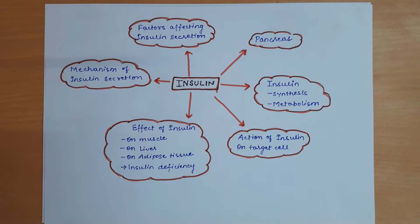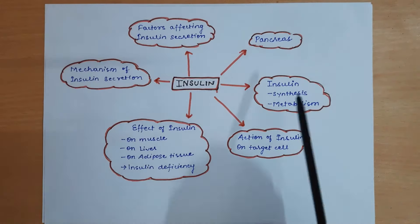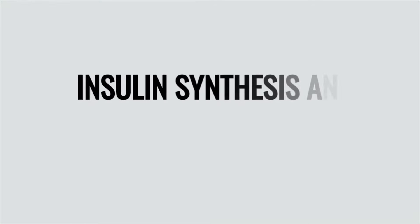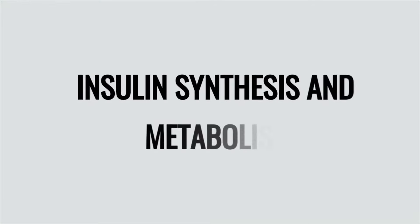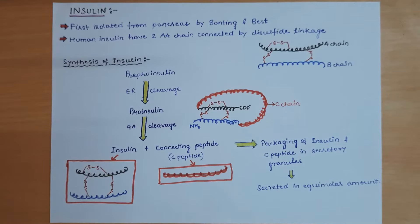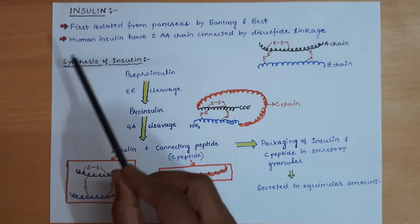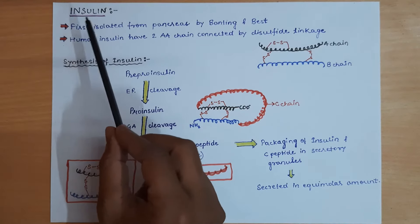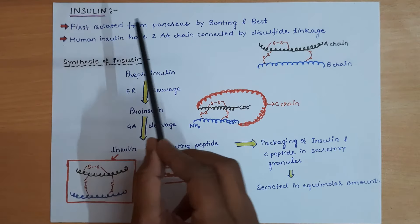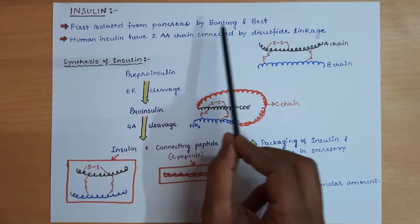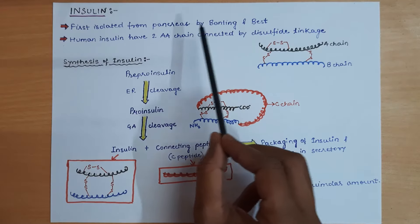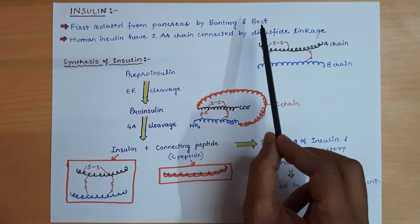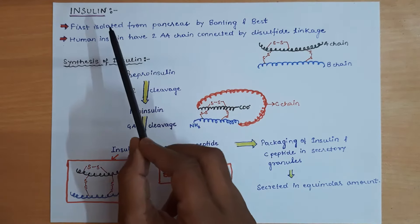Now we will discuss insulin synthesis and metabolism. Insulin was first isolated from the pancreas by Banting and Best, two scientists who were the first to isolate insulin from the pancreas.